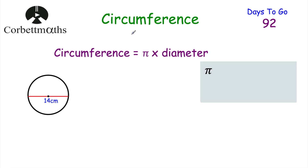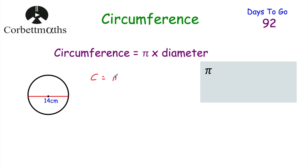Today's video we're going to look at circumference. The circumference of a circle is found by π times diameter. So if we want to find the circumference of a circle, we do: circumference = π × diameter. If we had a circle with a diameter of 14 centimeters and wanted to find the circumference — the distance around the outside — we would do circumference = π × 14. This is a calculator question; I'll show you a non-calculator question in a second.